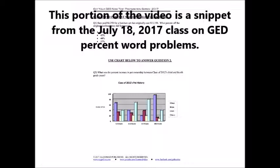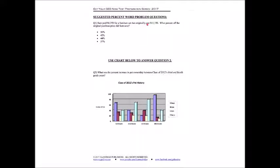So this first one here, number one, here on the screen says Sam paid $6,250 for a furniture set that originally cost $11,150. So he paid $6,250 for a furniture set that cost $11,150 originally. The question is, what percent off the original purchase did Sam save?